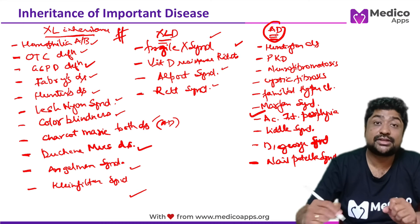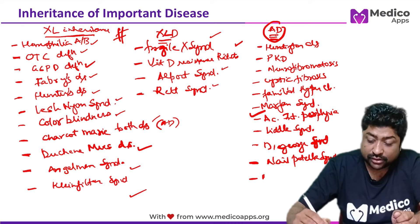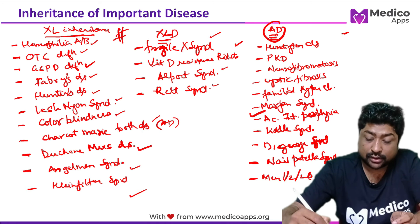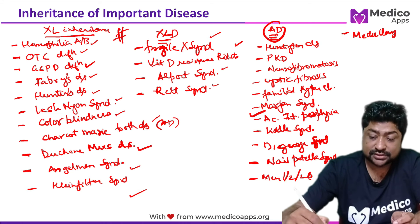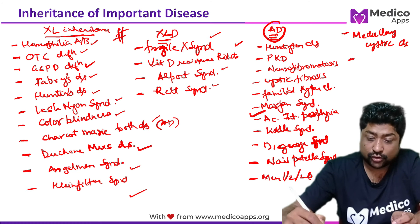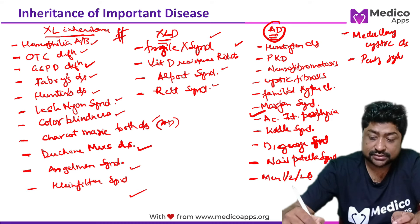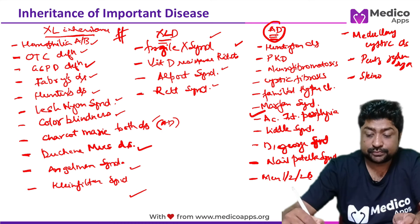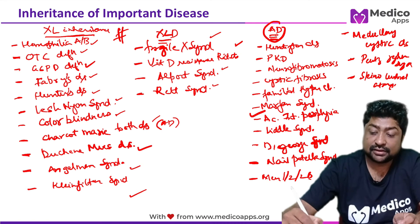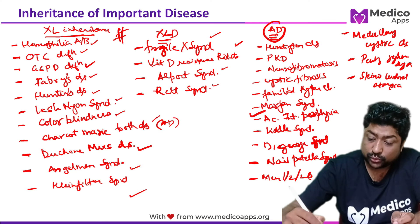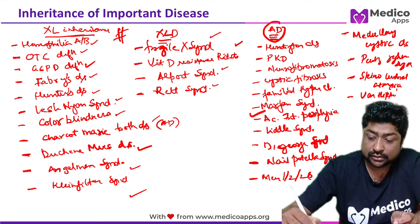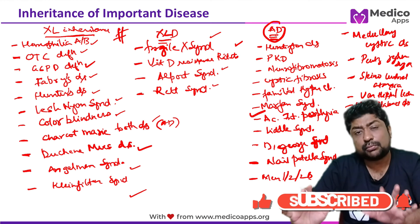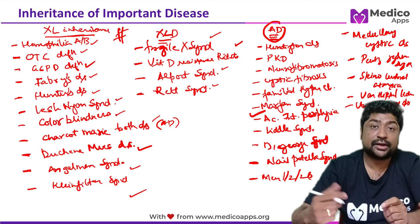Continuing with autosomal dominant disorders: MEN 1, MEN 2, MEN 2B — all autosomal dominant. Then medullary cystic disease, Peutz-Jeghers syndrome, most spinocerebellar ataxias, Von Hippel-Lindau syndrome, and Von Willebrand disease. These are the most important autosomal dominant inheritance patterns to remember.